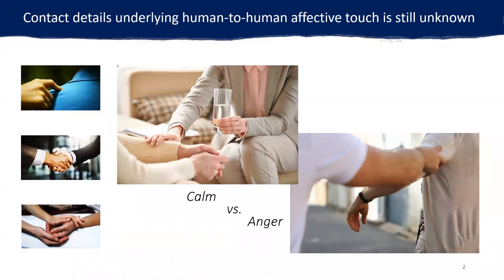In our social activities, we often communicate distinct emotional sentiments through nuanced touch. For instance, we might gently hold one's arm to offer a sense of calm, yet intensively hold one's arm to express anger or anxiety. As it indicates, distinct sentiments may be shaped by the subtlety in one's touch delivery. However, such contact details are still not fully understood due to the difficulty in quantifying naturalistic human touch.